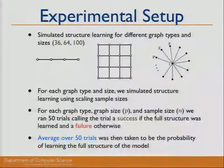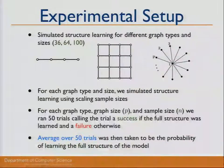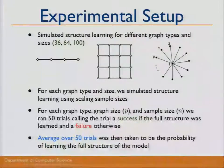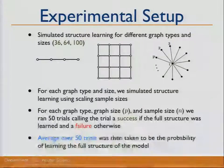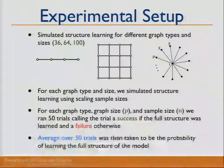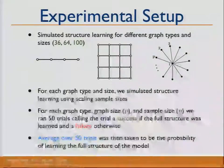For experiments, we simulated structure learning for different graph types and sizes: a chain graph, a grid, and a star graph where a single hub node connects to multiple outer nodes. For each graph type and size, we scaled the number of samples and ran 50 trials, calling it a success if we fully learned the true structure and averaging over trials to get the probability of full model recovery.